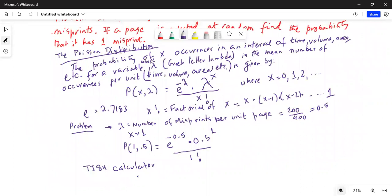What keys you press in TI-84 calculator? First, you press the second key. Then you press the VARS key. Then you scroll down to POISO PDF and hit enter. That's what we will do. Second VARS. Then you scroll down to POISO PDF and hit enter.